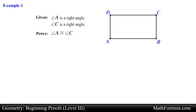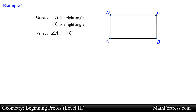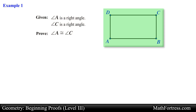Given that angle A is a right angle and angle C is a right angle, prove that angle A is congruent to angle C. Here we are provided with a diagram and are given two statements about the diagram. We are asked to conclude or prove that angle A is congruent to angle C. Notice that in this example we are given the conjecture to prove and are also provided with the diagram. All we need to do now is mark the given information in the diagram and plan our argument to prove the conjecture.